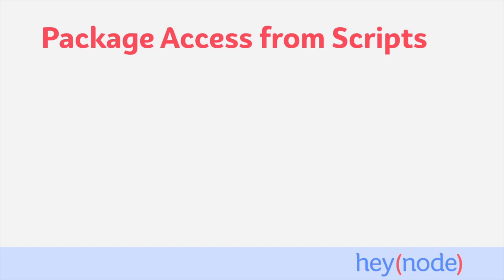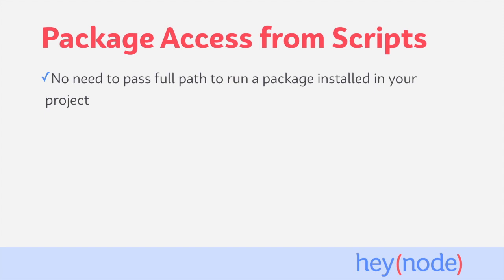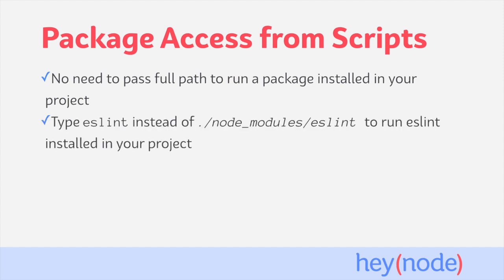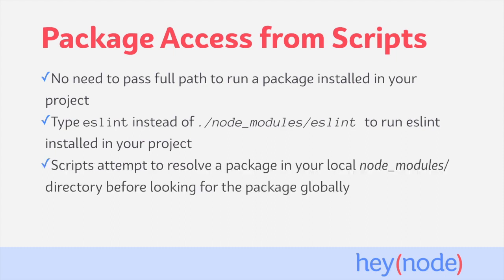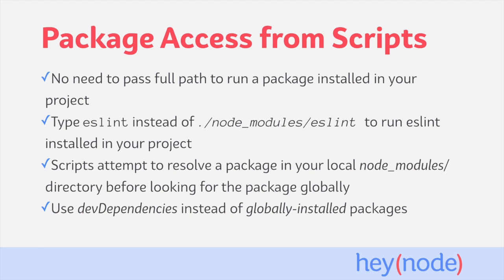One awesome feature of NPM scripts is that they can resolve packages installed in your project as if they were globally installed. Meaning, you don't need to use the full path to a package installed in your project to run it from a script. If you wanted to run a locally installed version of eslint from the command line, you'd need to use the full path to the package in your node_modules directory. From an NPM script, you just need to use the name of the package like you would if it was globally installed. Scripts will look in your node_modules directory for a locally installed version of a package first, and if it's not found, then it will look in your globally installed packages and use the one there if it's available. Often, packages used from the command line are globally installed, but when using scripts, it's a good idea to install them as a dev dependency instead, so the package is distributed with the project and everyone who runs the script uses the same version of the dependency.